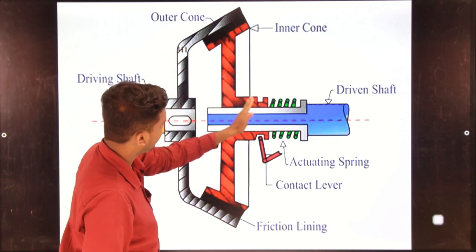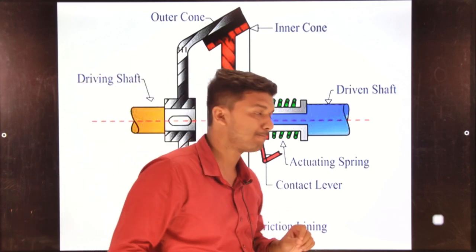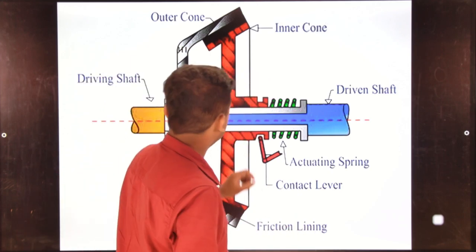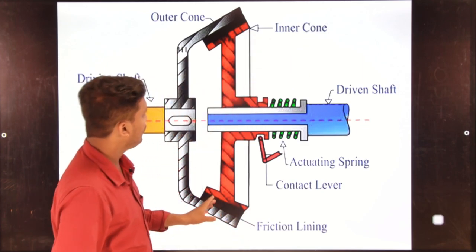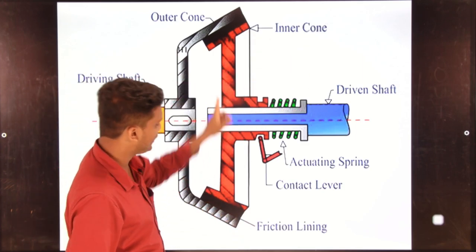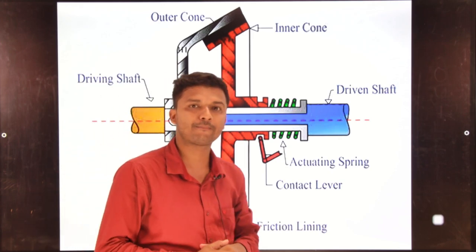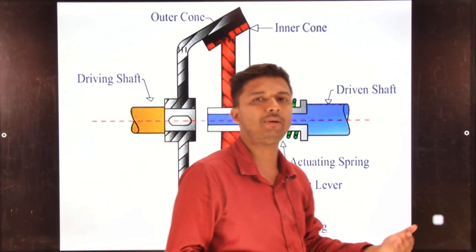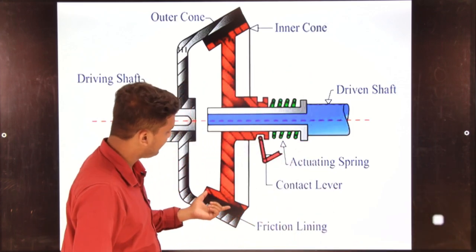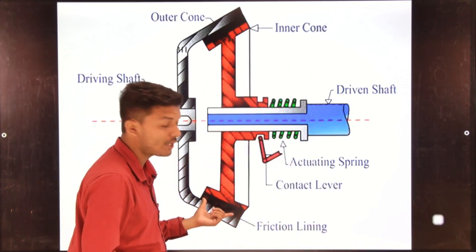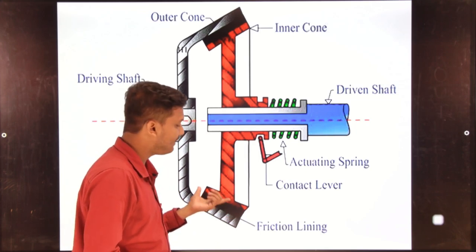The red color is the inner cone design of the clutch. That is why it is labeled here as inner cone. In the inner cone there is a friction lining. Every clutch has a friction lining, as we already studied in single plate and multi plate clutch. Here it is a friction lining — or friction plate, you can say.